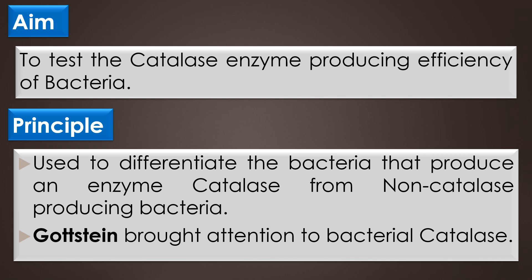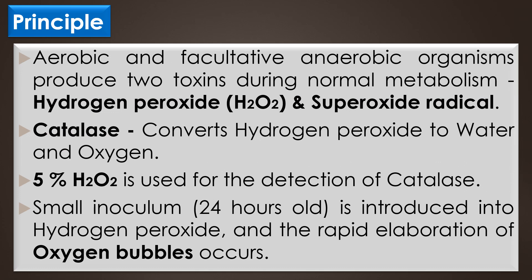Aerobic and facultative anaerobic organisms produce two toxic byproducts during normal metabolism: hydrogen peroxide and superoxide radicals. These bacteria have two enzymes that detoxify the products of normal metabolism, and one of these enzymes is catalase.